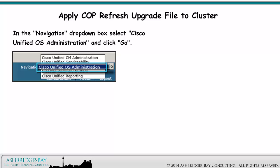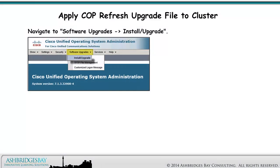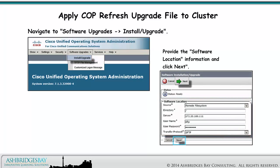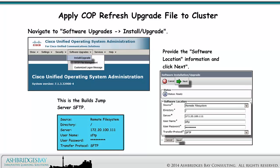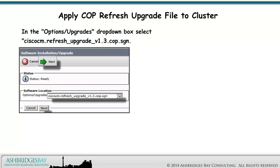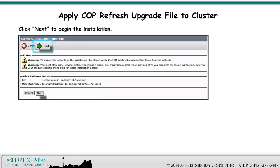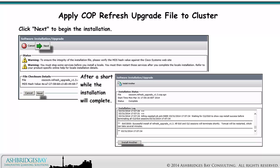In the Navigation drop-down box, select Cisco Unified OS Administration and click Go. Log in using Platform and the Platform Administrator password. Navigate to Software Upgrades > Install Upgrade. Provide the software location information and click Next. Use the BuildsJump server SFTP server. In the Options Upgrades drop-down box, select ciscocm.refresh_upgrade_version1.3.cop.sgn. The file will be downloaded by the CUCM server. Click Next to begin the installation. After a short while, the installation will complete.